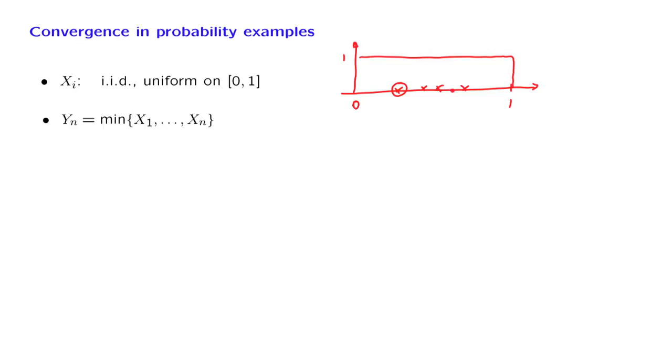Notice that if we draw more values, then the new values might be above the minimum, in which case the minimum does not change. But we might also get a value that's below the minimum, in which case the minimum moves down. The only thing that can happen is that the minimum goes down. It cannot go up. And this gives us this inequality.